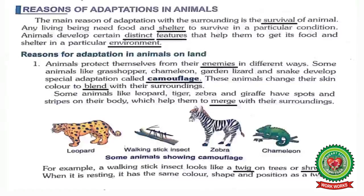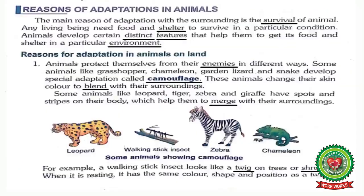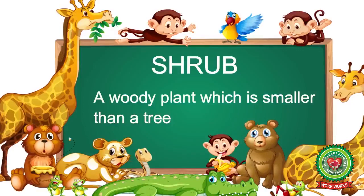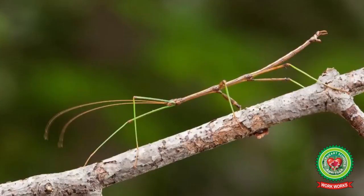The next example is the walking stick insect, which looks like a twig on a tree or shrub. Underline 'twig' — meaning a thin branch of a tree. Underline 'shrub' — meaning a woody plant which is smaller than a tree. When the walking stick insect sits on the branch of a tree, its color, shape, and position resemble a twig, and this helps the stick insect to protect itself from its enemies.